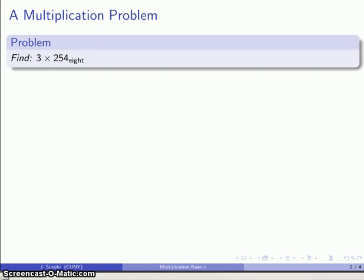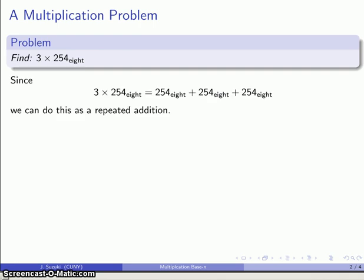Now, here's where it's worth starting with the definition. This product 3 times 254 base 8 is the sum of three 254s. So that's 254 base 8 plus 254 base 8 plus 254 base 8. And so I can do this as an addition because I know how to add in base 8.